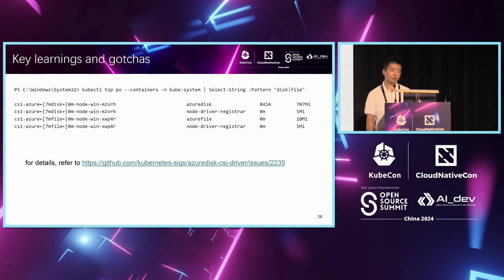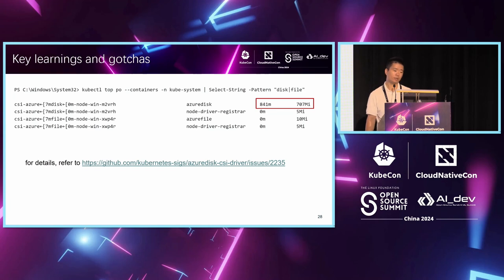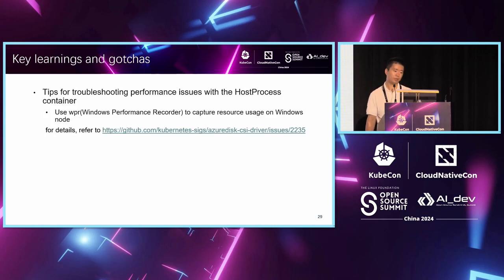Now I will show you the key learnings and gotchas we encountered during the migration process. Some customers who had already migrated to the host process container found that once they had mounted a few volumes on the Windows node and used the 'perf ctrl top' command to check, the Azure Disk CSI driver was consuming a lot of CPU and memory. If there are lots of volumes mounted on a node, it can almost lead to the entire Windows node going OOM. We wanted to investigate this issue, and we used a tool called WPR (Windows Performance Recorder) to capture the CPU usage on the Windows node.